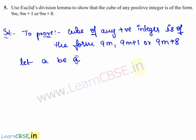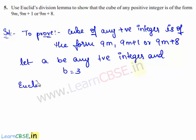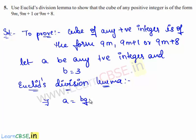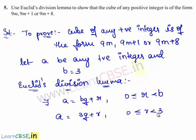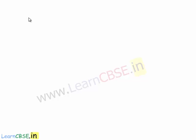Let a be any positive integer and b equal to 3. Using Euclid's division lemma, if a and b are any two positive integers, there exist q and r such that a equals bq plus r, where 0 is less than or equal to r is less than b. Since b equals 3, we have a equals 3q plus r and 0 ≤ r < 3. This implies r can take values 0, 1, and 2. Therefore, any positive integer a is of the form 3q, 3q plus 1, or 3q plus 2.